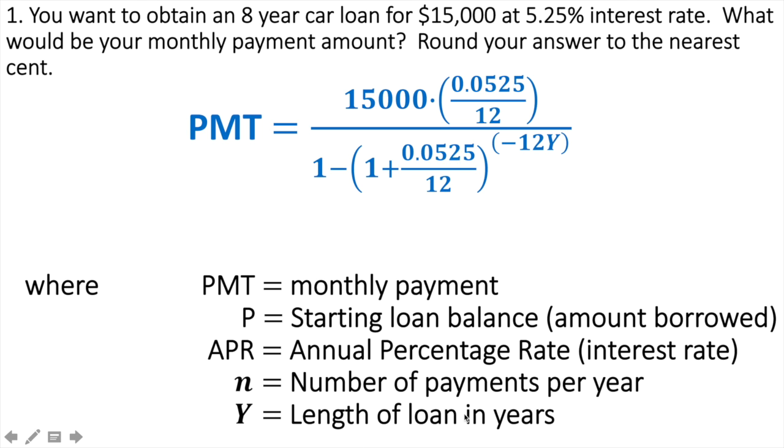Finally, we're going to have to do the length of loan in years. This one's an eight-year car loan, so I'm just going to type in 8 here. But notice this is negative 12 times Y, so now we're going to go negative 12 times 8.